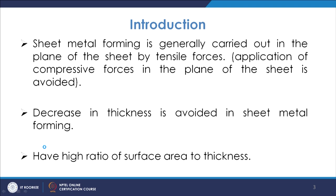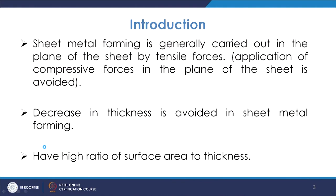In sheet metal forming, the sheet is subjected to tensile forces that cause deformation. Compressive forces are normally avoided because they may lead to buckling of the sheets. The force is applied in such a manner that the sheet is under tensile force when subjected to deformation. Decrease in thickness is normally avoided, and a characteristic feature of sheet metal operations is the high ratio of surface area to thickness compared to conventional metal forming operations.